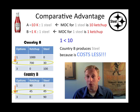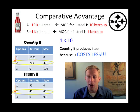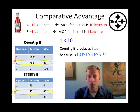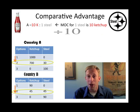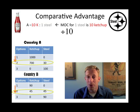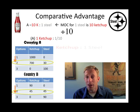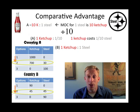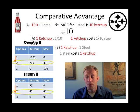If one country has a comparative advantage in the production of one good, you can automatically assume that the other country has a comparative advantage in the production of the other good. We could also go through the math. We already knew that Country A gives up 10 units of ketchup to get 1 unit of steel. Now we divide each side by 10 to find the cost of 1 unit of ketchup: that gives a ratio of 1 ketchup to 1/10 of a steel. Country B's math is still a 1-to-1 ratio. So Country A has a comparative advantage in ketchup — they only give up 1/10 of a unit of steel, whereas Country B has to give up a full unit. Country A should specialize in ketchup; Country B should specialize in steel.